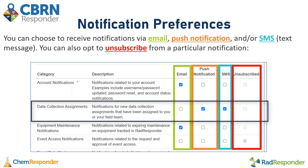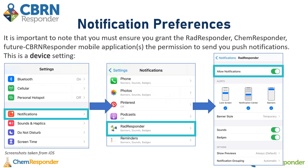For example, for data collection assignments, I am setting my notification to be sent via push notification and via text message. It's important to note that you must ensure you grant the RAD Responder, Chem Responder, and future CBRN Responder mobile applications the permission to send you push notifications. This is a device setting — these screenshots are taken from an Apple iOS device, but you do need to go into your notification settings, open the RAD Responder, Chem Responder, or CBRN Responder apps, and ensure that the Allow Notifications option is turned on. Otherwise, you won't be receiving those push notifications.